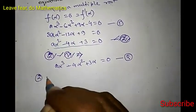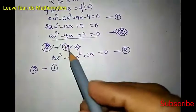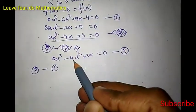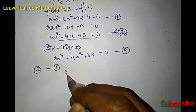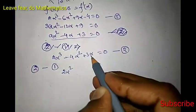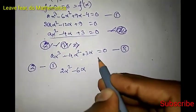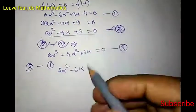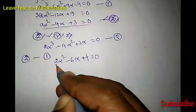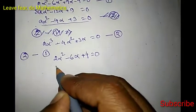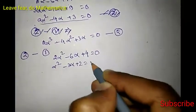Now do the operation: equation 2 minus equation 1. The A alpha cubed terms cancel out. Then minus 4 alpha squared plus 6 alpha squared gives 2 alpha squared. Then 3 alpha minus 9 alpha gives minus 6 alpha, and then minus 4 becomes plus 4 equals 0. Cancel the factor 2, then we will have alpha squared minus 3 alpha plus 2 equals 0.